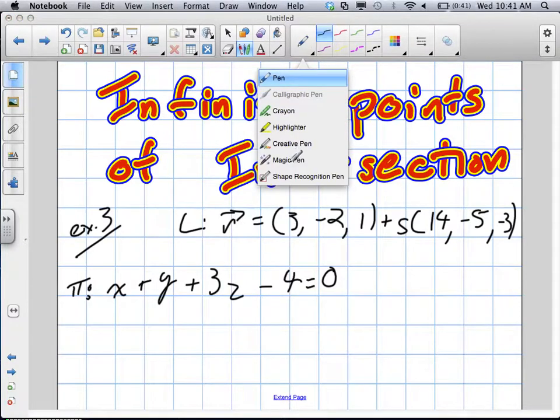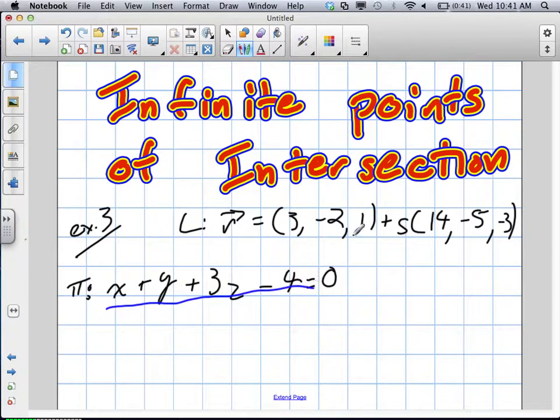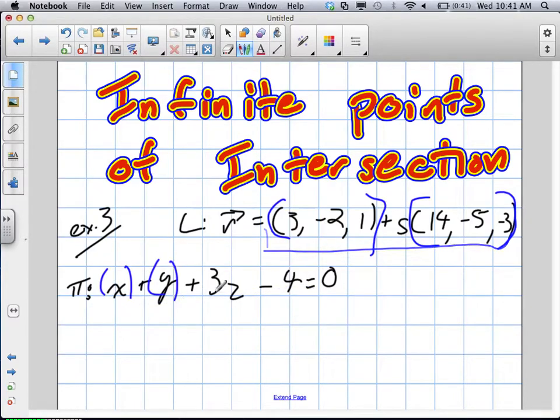They've given us an equation of a plane in Cartesian form, and they've given us our line. We have our direction vector and a point on the line. Again, because this is represented with x, y, z, what do we want to do to the vector form of this line? Parametric. We want to put it into parametric form.